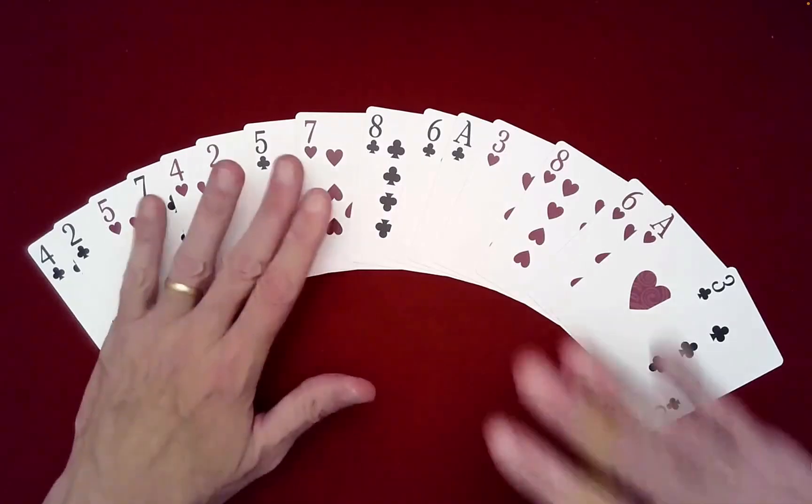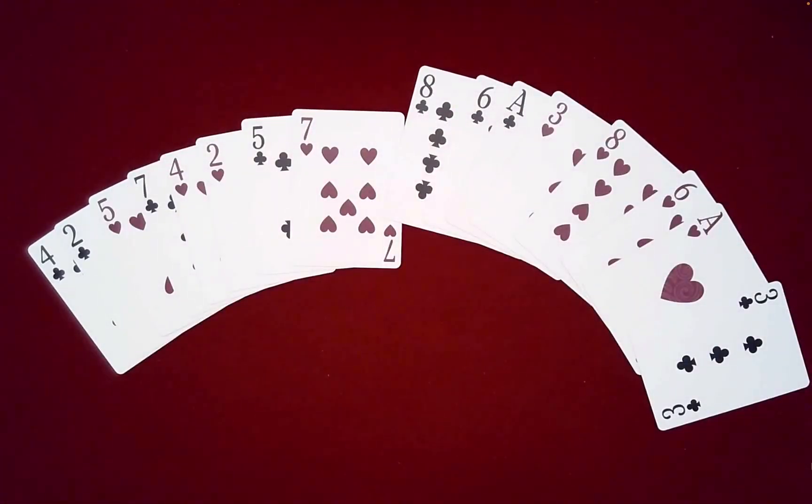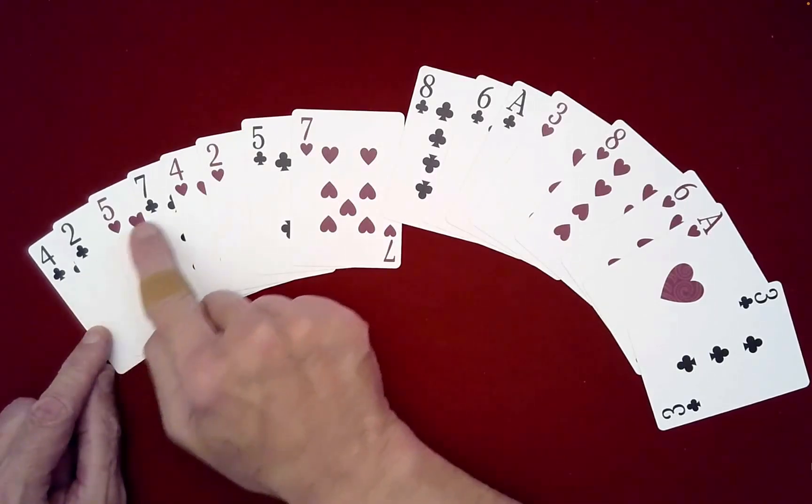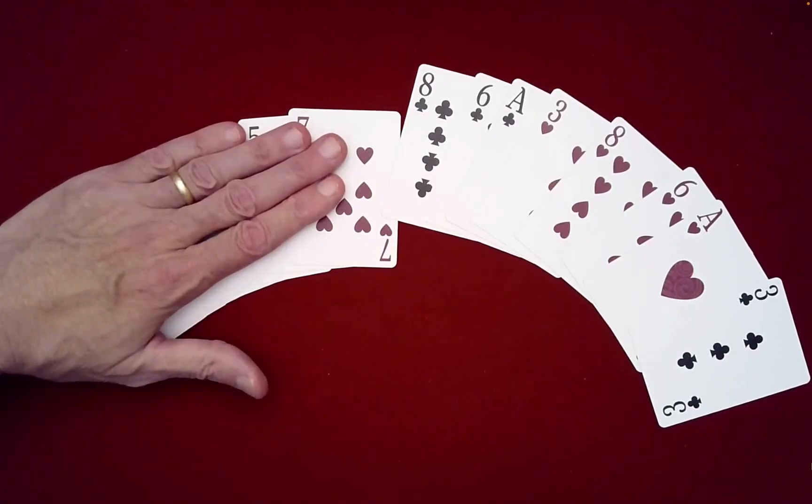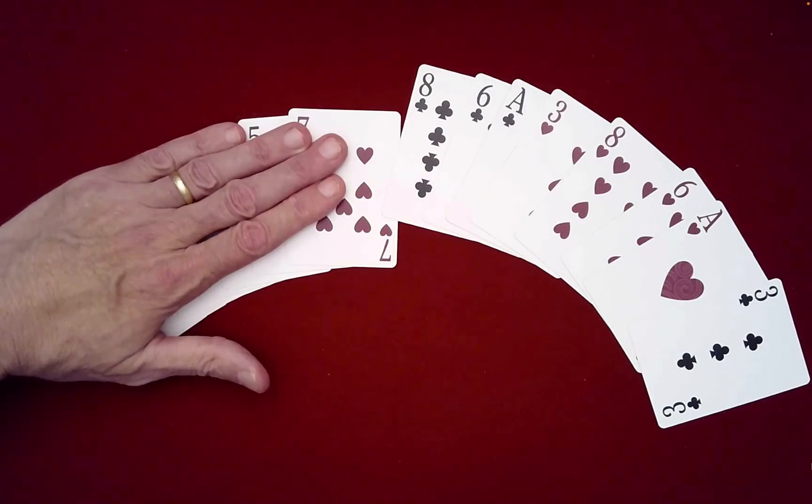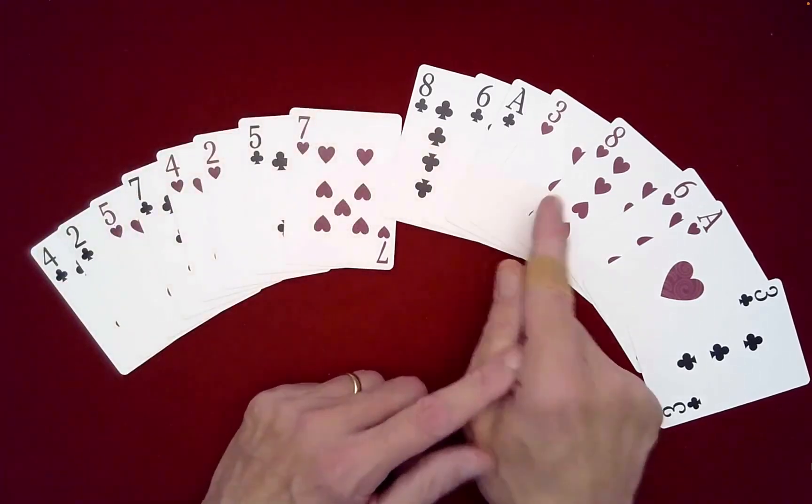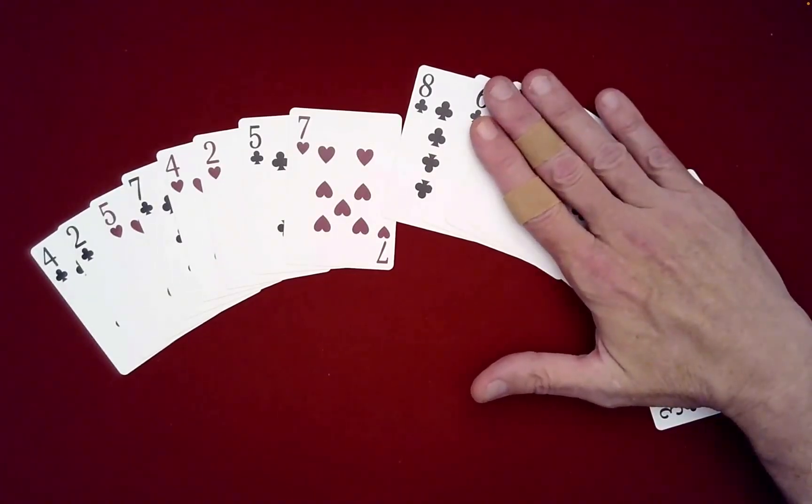Well, what it's done is it's created two larger two cycles. So for example, we have four, two, five, seven, four, two, five, seven. This is a two cycle of cycle length four. Before they were cycle length two, but now it's double the cycle length. So now it's four. Same thing here. Eight, six, ace, three, eight, six, ace, three. This is a two cycle with cycle length four.